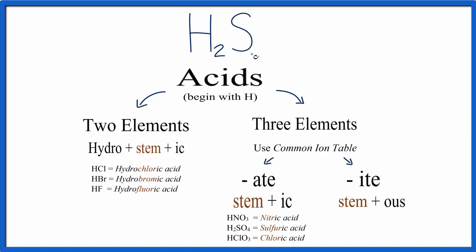So we have H and S. We have two different elements, so we're going to use this part of our flowchart to name the acid.